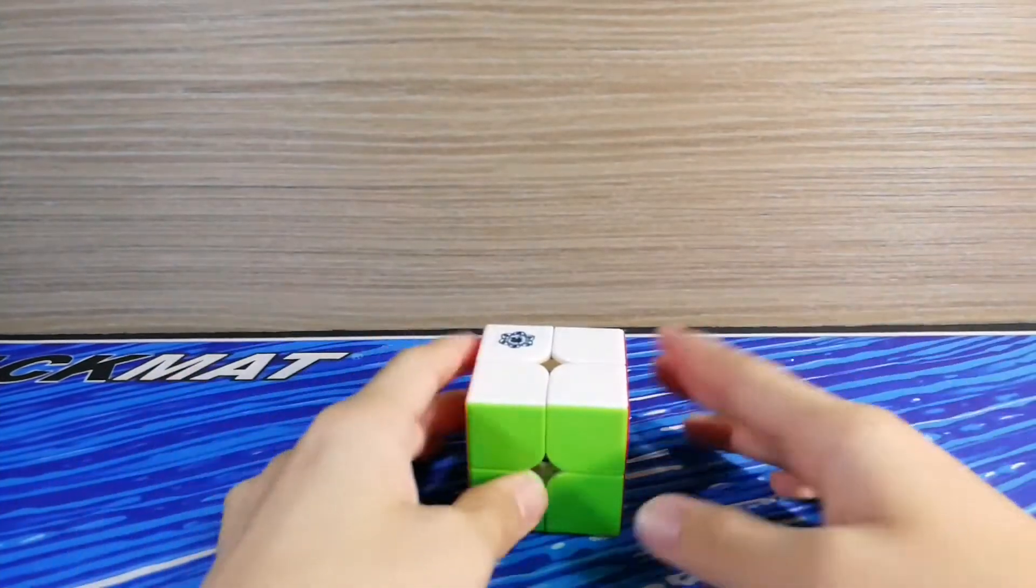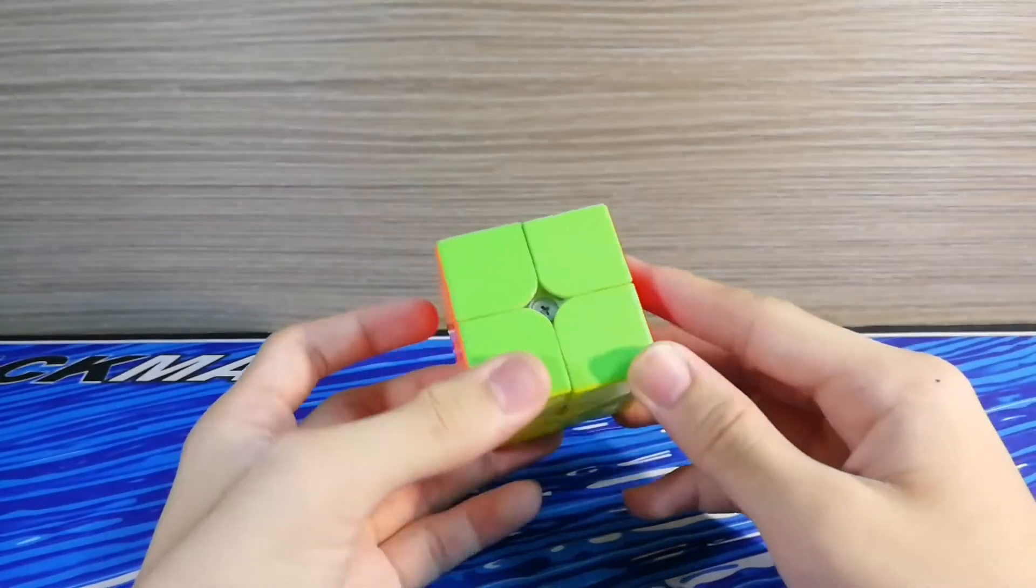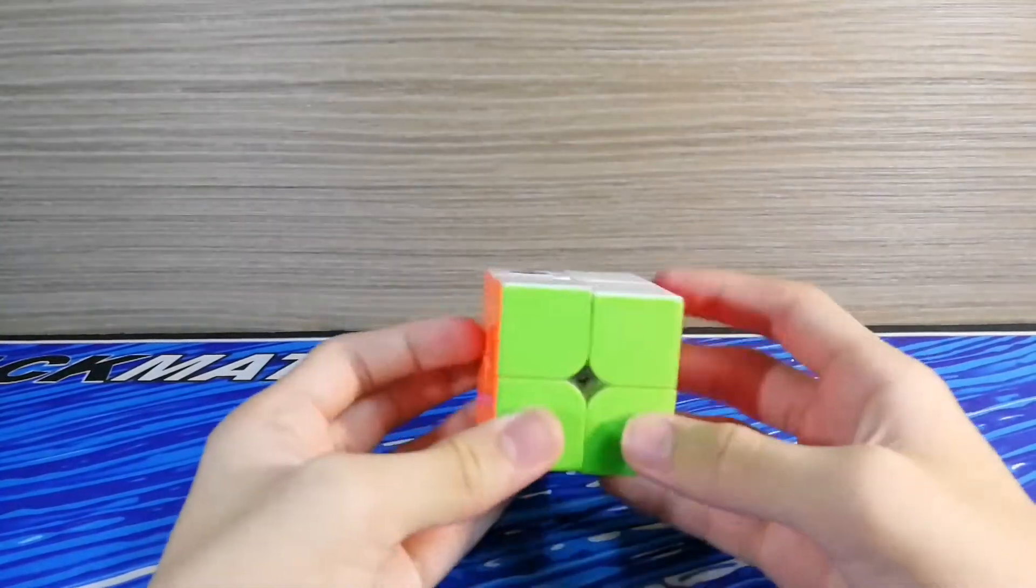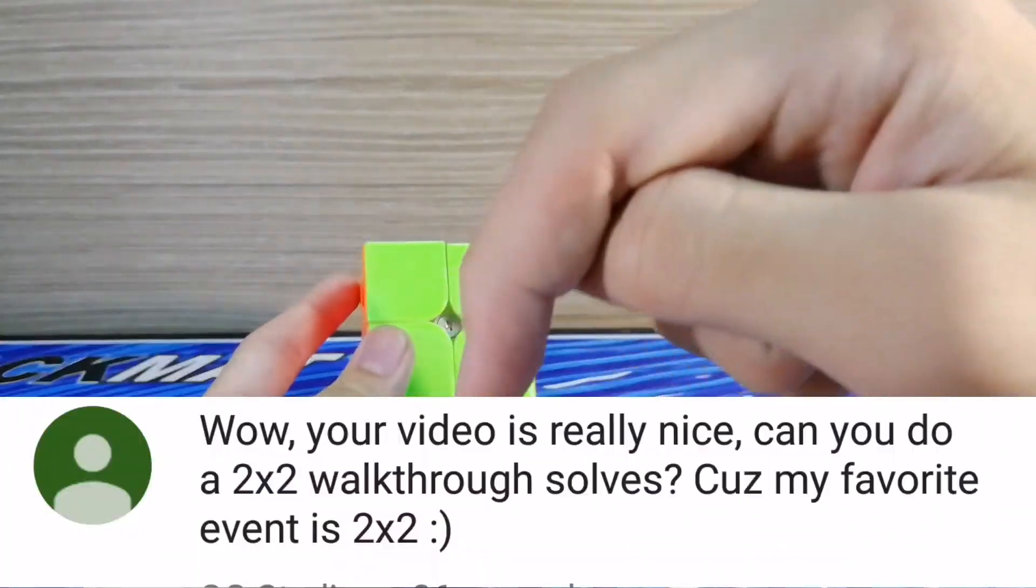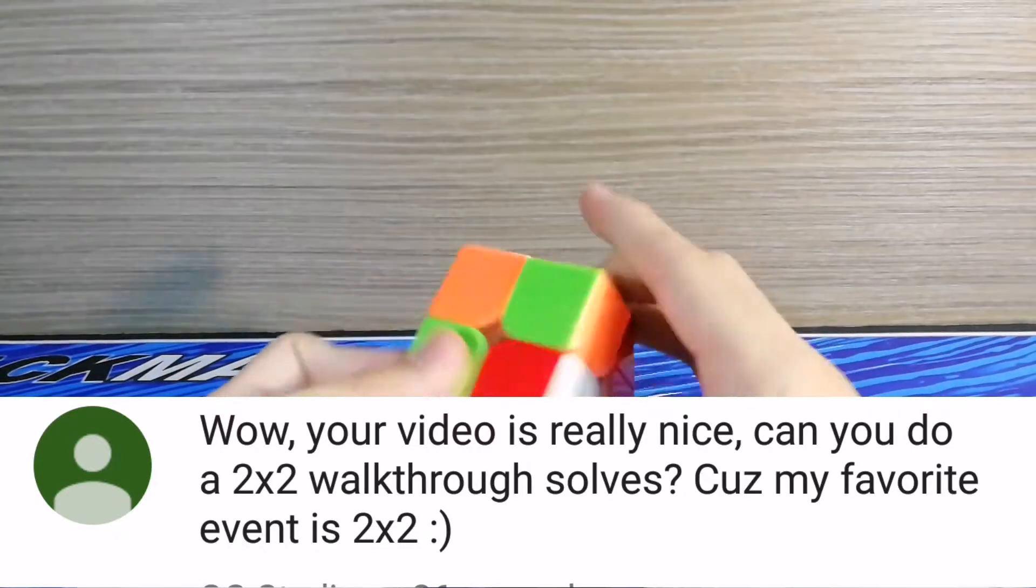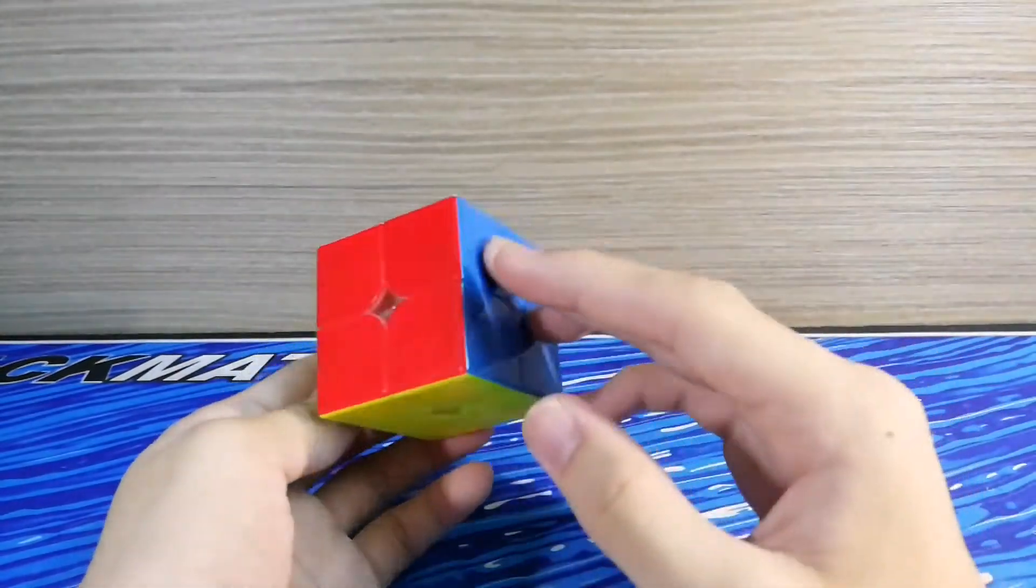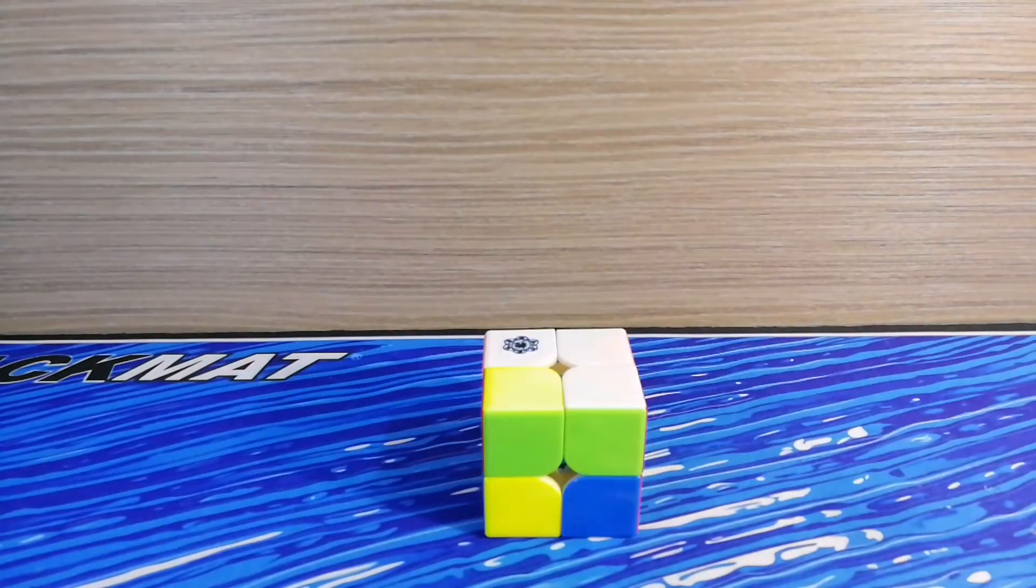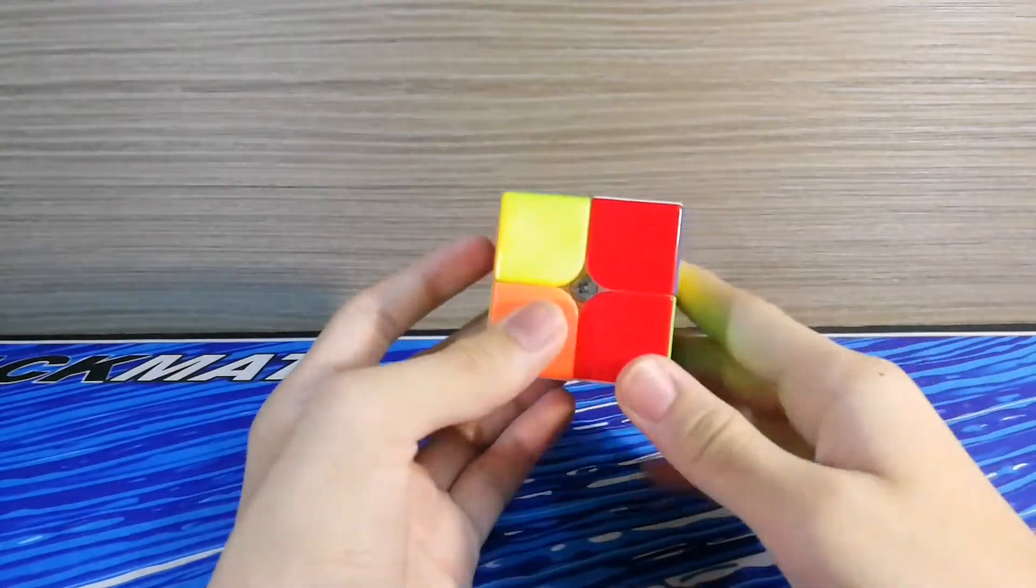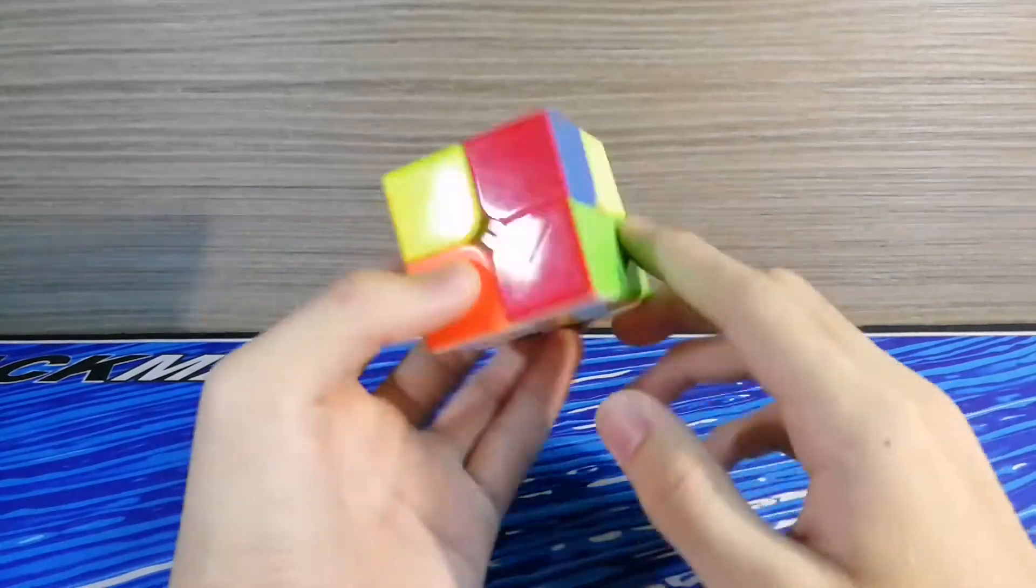Hey guys, Ohwaki here. Today I'm going to do a 2x2 Ao5 solve. I didn't really want to do this one because it was requested by this guy, yeah this guy. If you requested me to do a 2x2 Ao5 solve, yeah it's okay so let's get into it. All the scrambles are going to be in the description, you can check them out. I will only do 5 of them and I'm color neutral in 2x2, so let's get started.